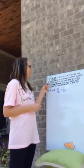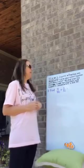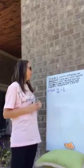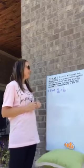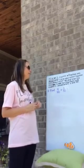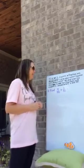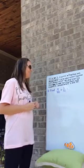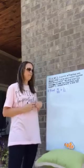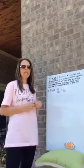It is fourth grade NF5, and it says: express a fraction with denominator 10 as an equivalent fraction with denominator 100, and use this technique to add two fractions with respective denominators 10 and 100.